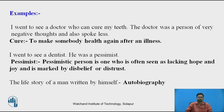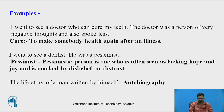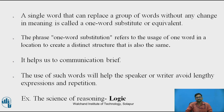A pessimist is a person who is often seen as lacking hope and joy, marked by disbelief or distrust. Another example: the life story of a man written by himself — we say it is an autobiography. A single word that can replace a group of words without any change in meaning is called a one word substitute or equivalent.